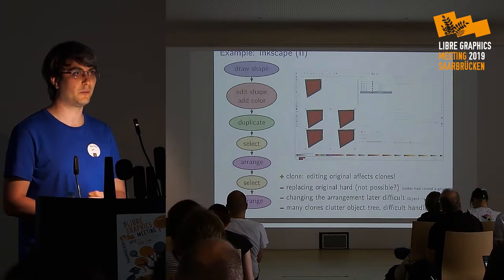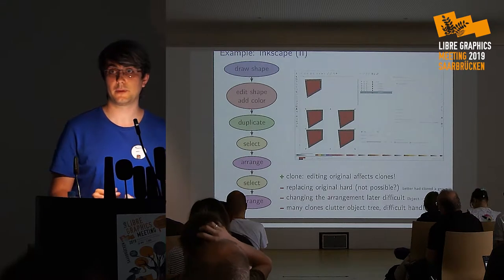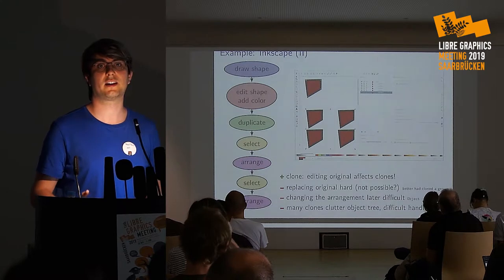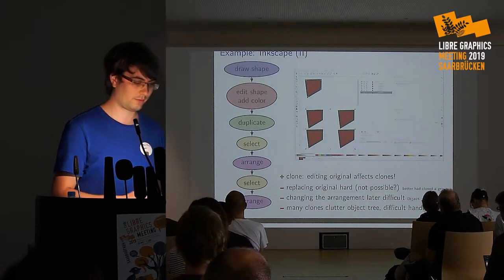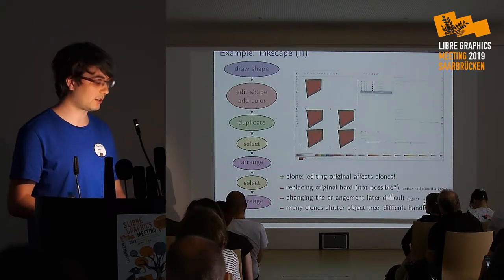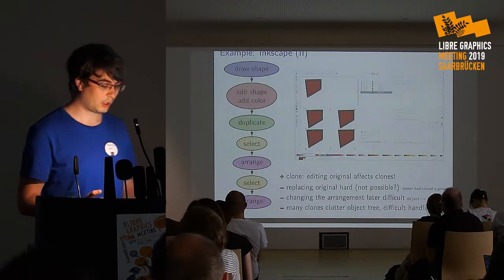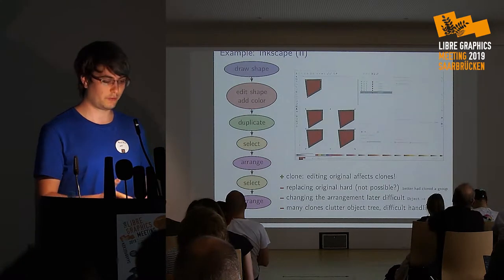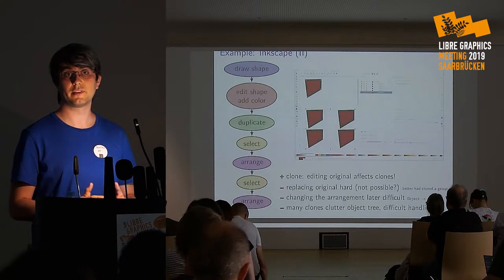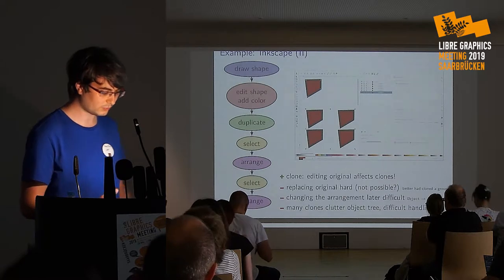But it has some disadvantages. First of all, what happens if you want to replace the original shape? If you want to replace this fancy rectangle with an ellipse, you have to start over again from the beginning. You have to draw the ellipse, edit its color, duplicate it, select all the duplicates, and arrange it again. Or if you want to change the arrangement — if you just want to change the spacing — you have to select all the shapes and arrange it again. So, everything you did before is lost.